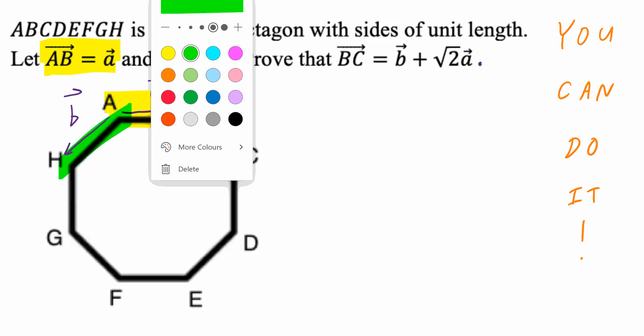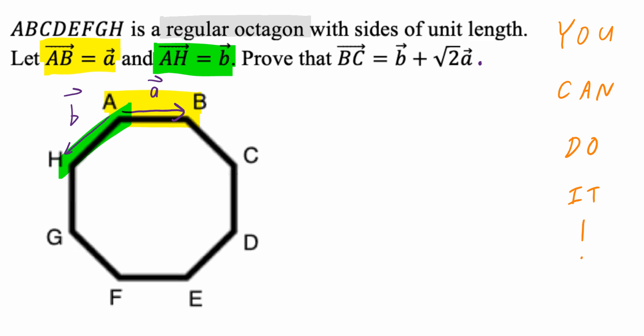Now, if you reread the first sentence, regular octagon, sides of unit length. This means throughout this entire octagon, the magnitude of each side is going to be 1. Something that you want to think about, which will help you in a moment.